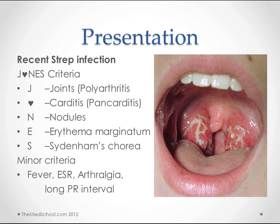If it does progress beyond this stage and becomes rheumatic fever, then we have the Jones criteria to help us identify it. Some people like to use the mnemonic spelling Jones with a heart instead of an O. J stands for joints — it's a polyarthritis. The heart is for carditis. You get a pancarditis with a mid-diastolic murmur.